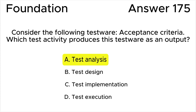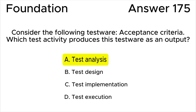The correct answer is A) test analysis. Test analysis produces acceptance criteria as test conditions and defect reports regarding defects in the test basis, according to the ISTQB syllabus. Answer B is invalid because test design work products include test cases, test charters, coverage items, test data requirements, and test environment requirements. Answer C is invalid because test implementation work products include test procedures, automated test scripts, test suites, test data, test execution schedule, and test environment elements.